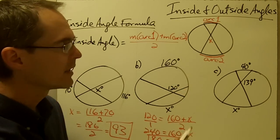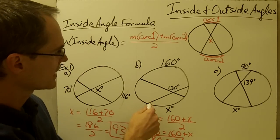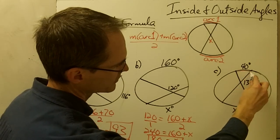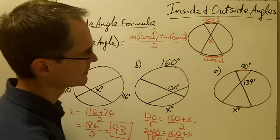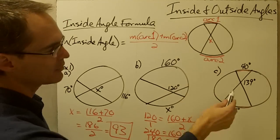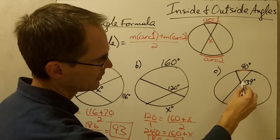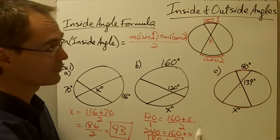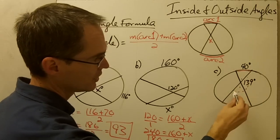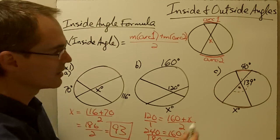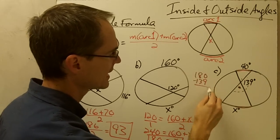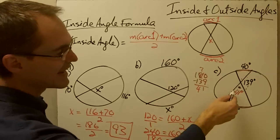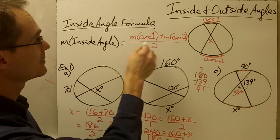Example 1c: at first glance this looks similar to example b, but there's a slight difference. I've been given these two arcs — arc 1 and arc 2 where x is — which looks like the same setup. However, the angle inside my circle is not one of the two angles that goes with these two arcs; it's this angle over here, which forms a linear pair with those two angles. So the first thing I want to do is find the value of that angle: 180 minus 139 equals 41 degrees. Now I'll use that 41-degree angle in my inside angle formula.